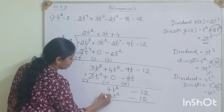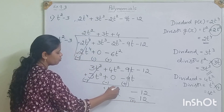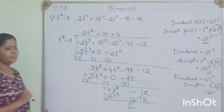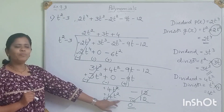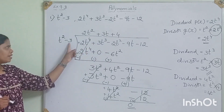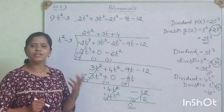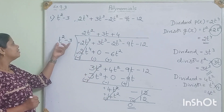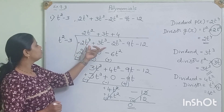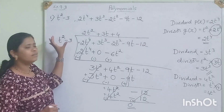In division we change the sign. Plus 4t squared minus 4t squared cancels. Minus 12 plus 12 cancels. The remainder is 0. Since we get 0 as the remainder, it means that t squared minus 3 is the factor of the second polynomial.